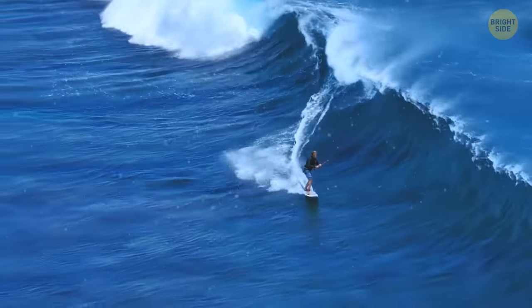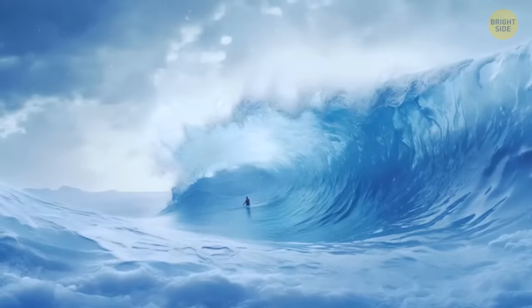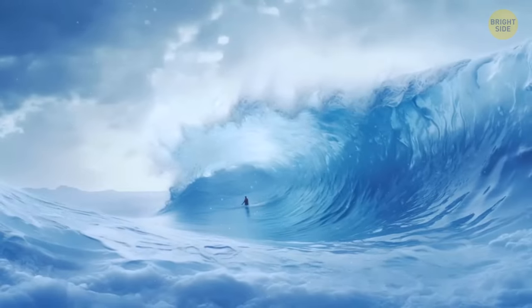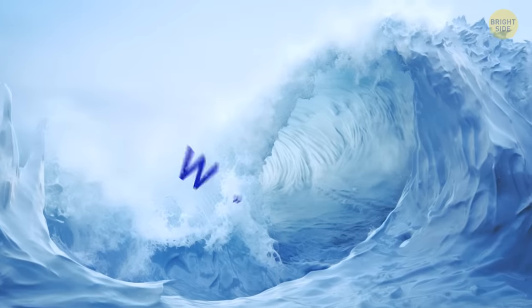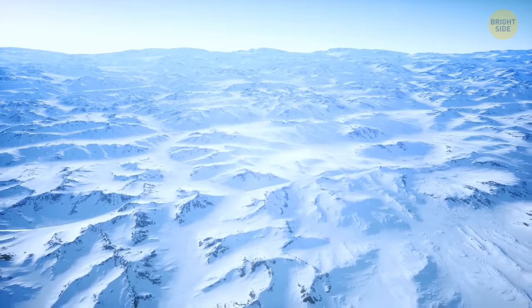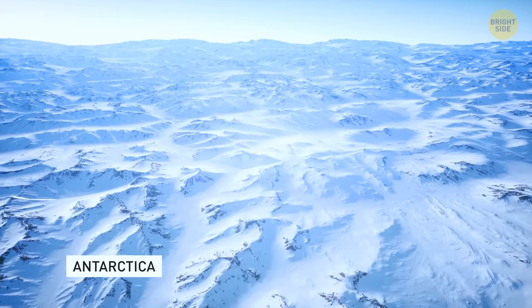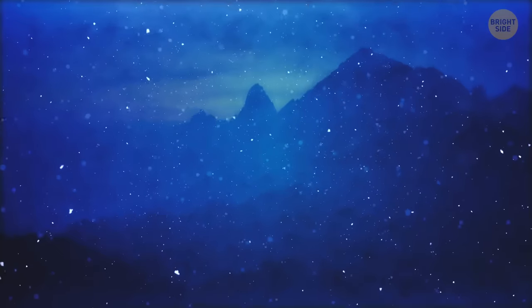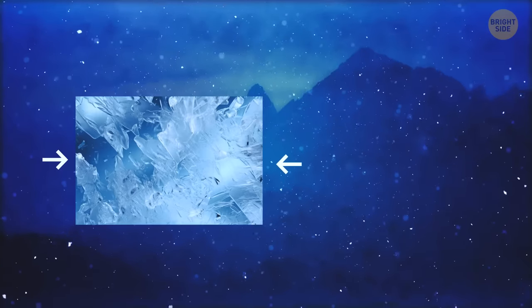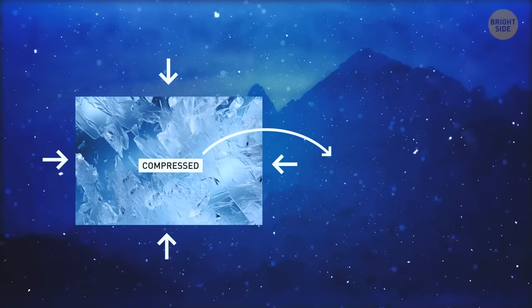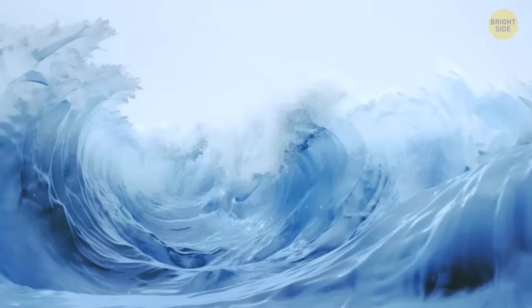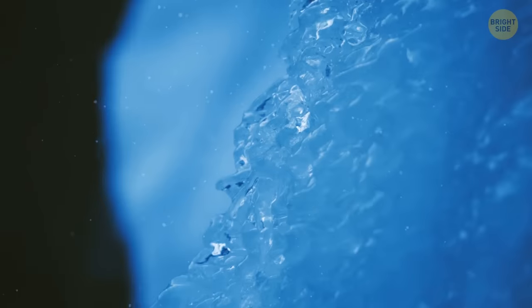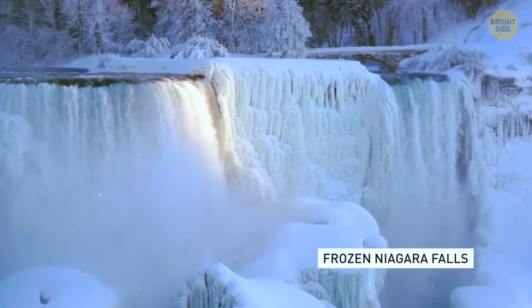Imagine surfing a perfect wave when it suddenly freezes. Well, it sure sounds creepy — but such things actually do happen! You can see mind-boggling frozen waves in Antarctica. These waves occur when the ice gets compressed and the ever-increasing pressure squeezes the air bubbles out of it. As for the beautiful blue color, it's the result of the ice melting and refreezing.